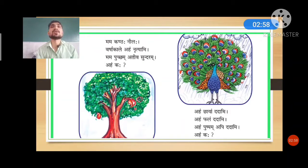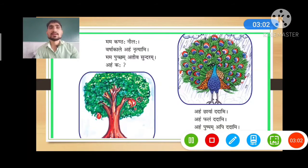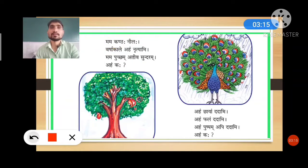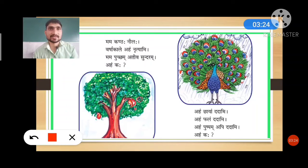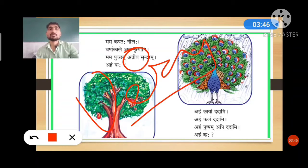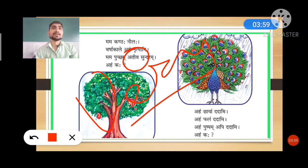Now let's understand the concept. Mama means 'my.' Kanta means 'neck.' Nilaha means 'blue.' So mama kantaha nilaha means 'my neck is blue.' Varsha kale means 'at rainy time.' Aham means 'I.' Nrityami means 'is dancing' — both continuous present and simple present can be used here. Mama puccham means 'my feathers.' Ativa means 'very.' Sundaram means 'beautiful.' Aham kaha — 'who am I?' — is the question asked at the end.